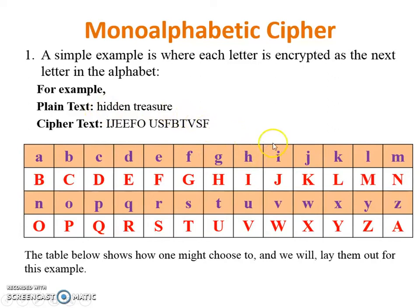Now let's see the encryption process with an example. The plaintext is 'hidden treasure.' As per the rule, I have made a table where each letter is encrypted as the next letter in the alphabet — A is encrypted with B, B is encrypted with C, and so on. So from the given plaintext, H is encrypted with the next letter I, and we continue substituting each letter accordingly.